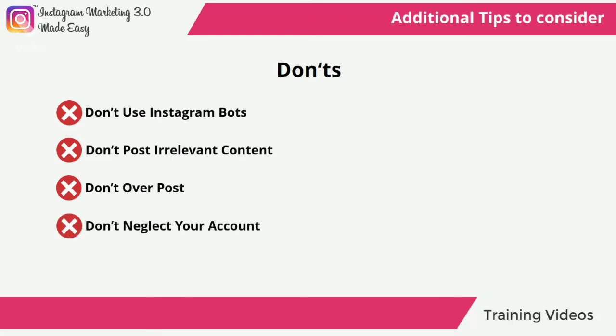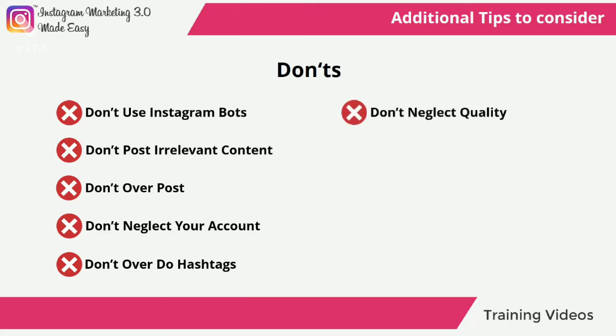Don't neglect your account — not posting regularly is just as bad as posting too much, as you risk your followers losing interest in your content. Don't overdo hashtags — hashtags are necessary, but too many of them are not going to help you, so keep them on the down-low with 10 hashtags per post at most. Don't neglect quality — Instagram is all about the visuals, so make sure to post only the best quality images according to Instagram standards.